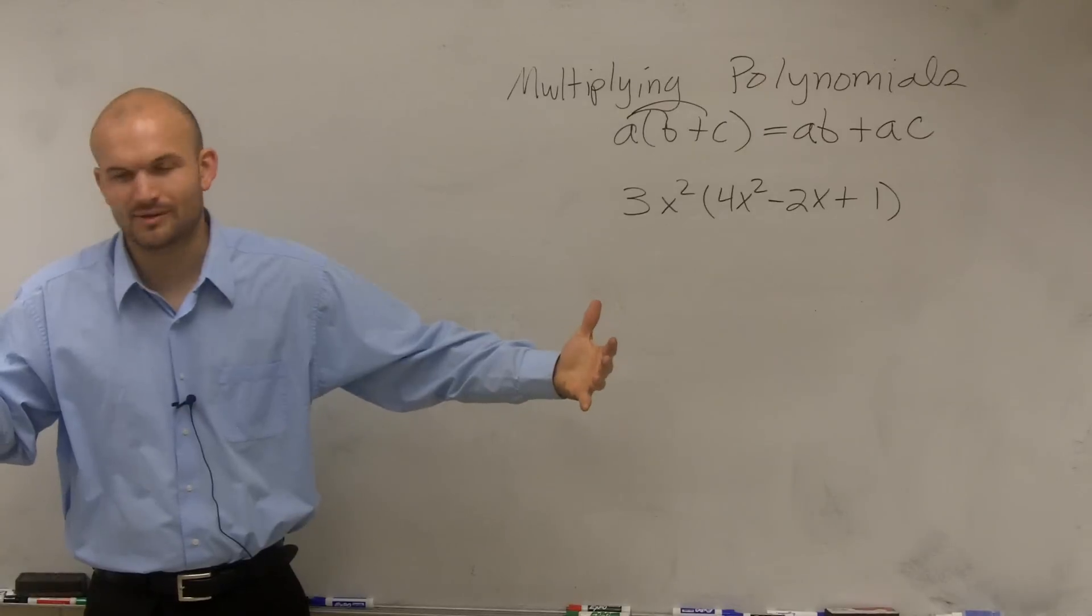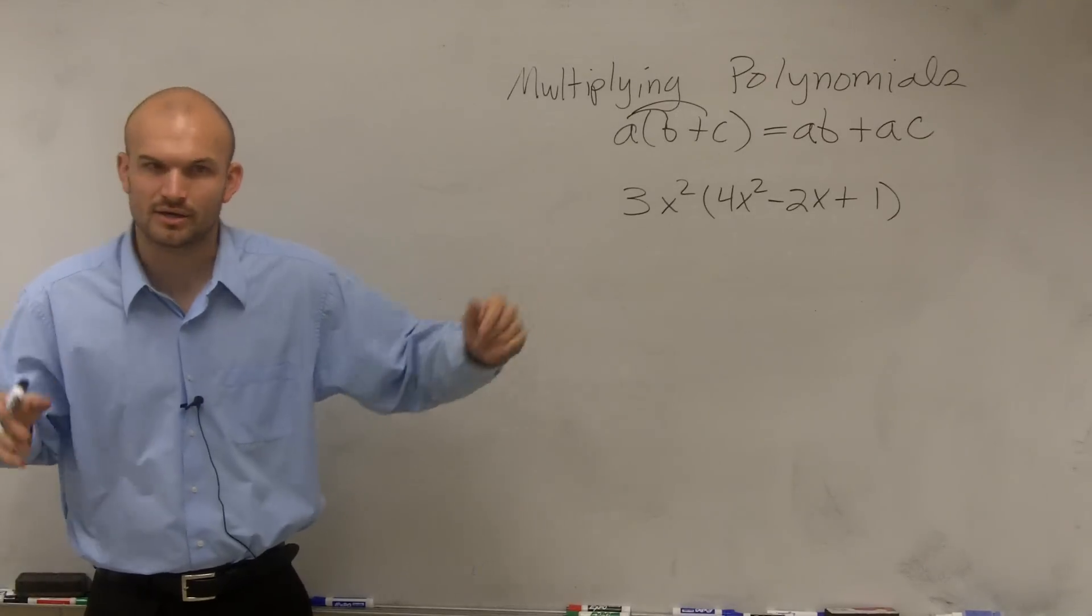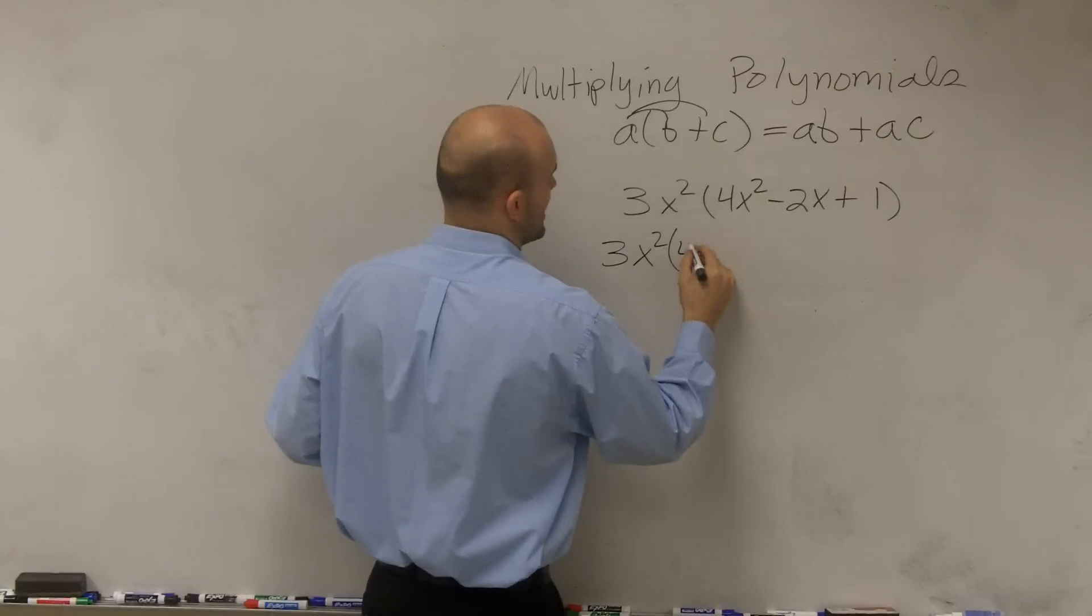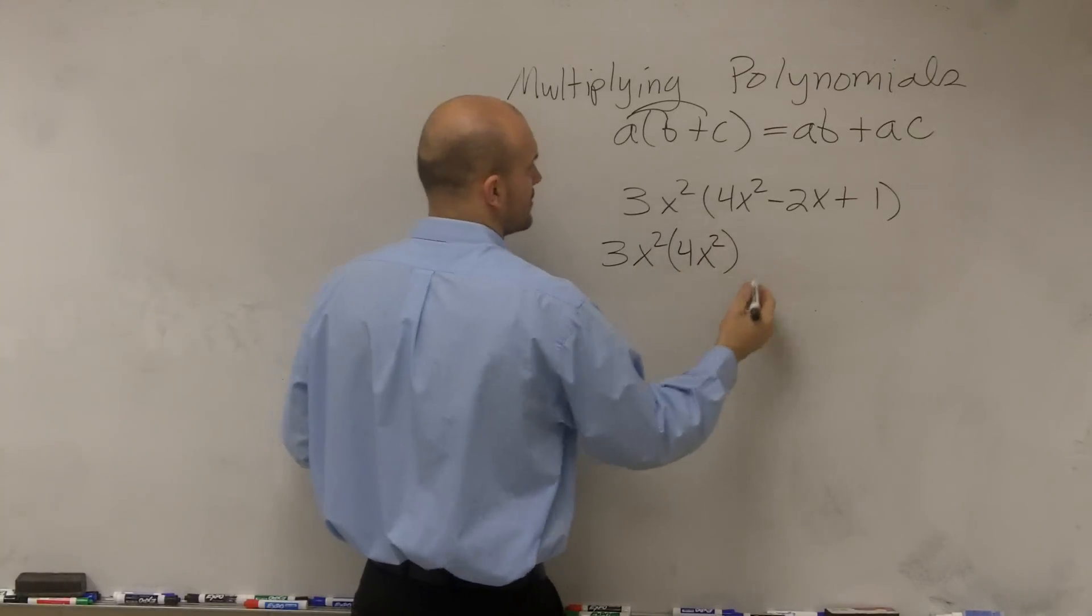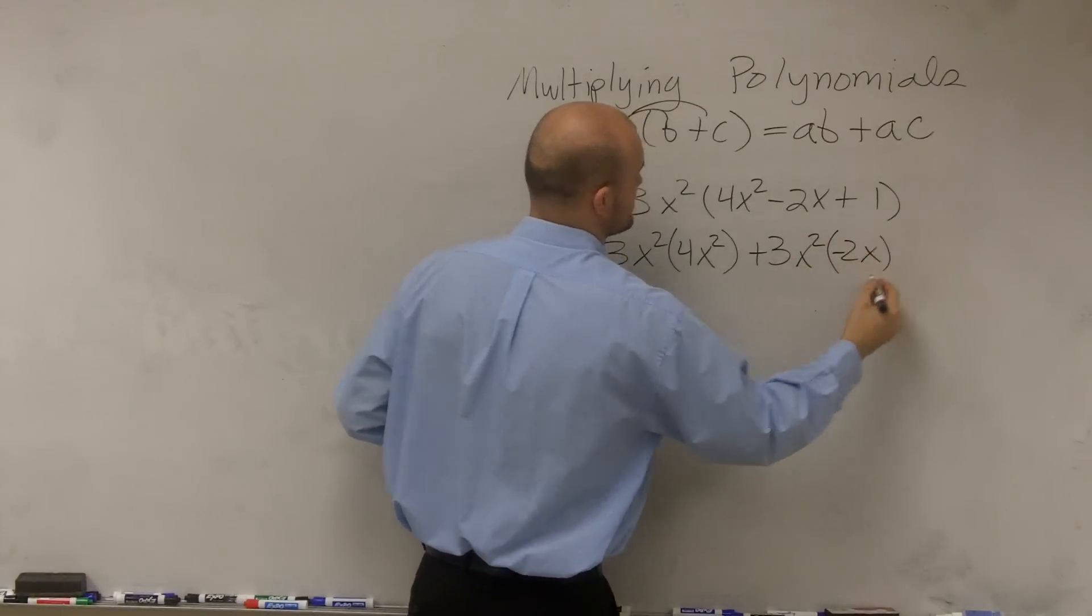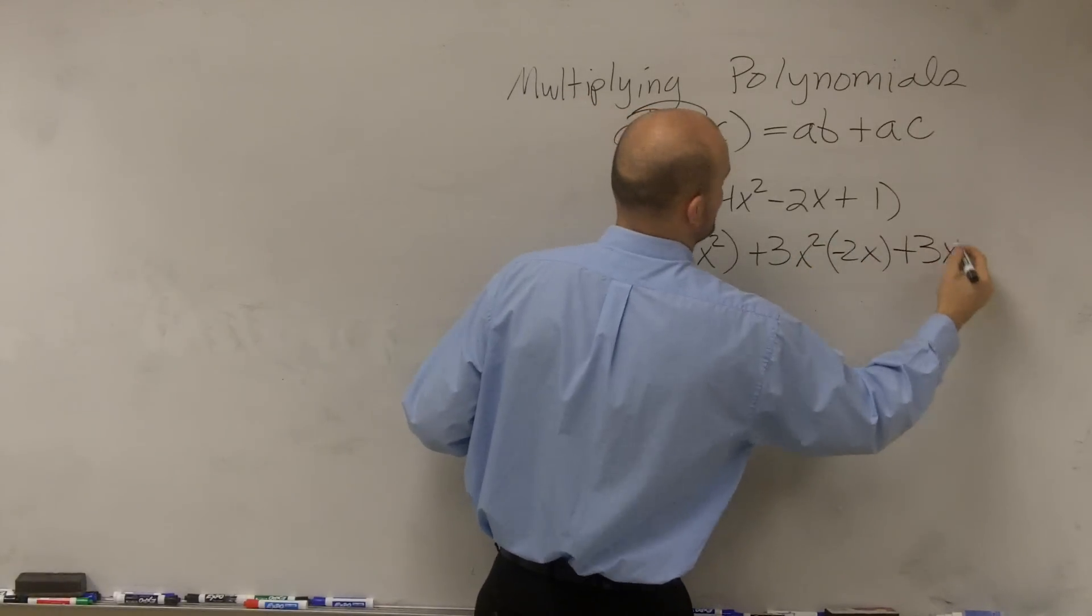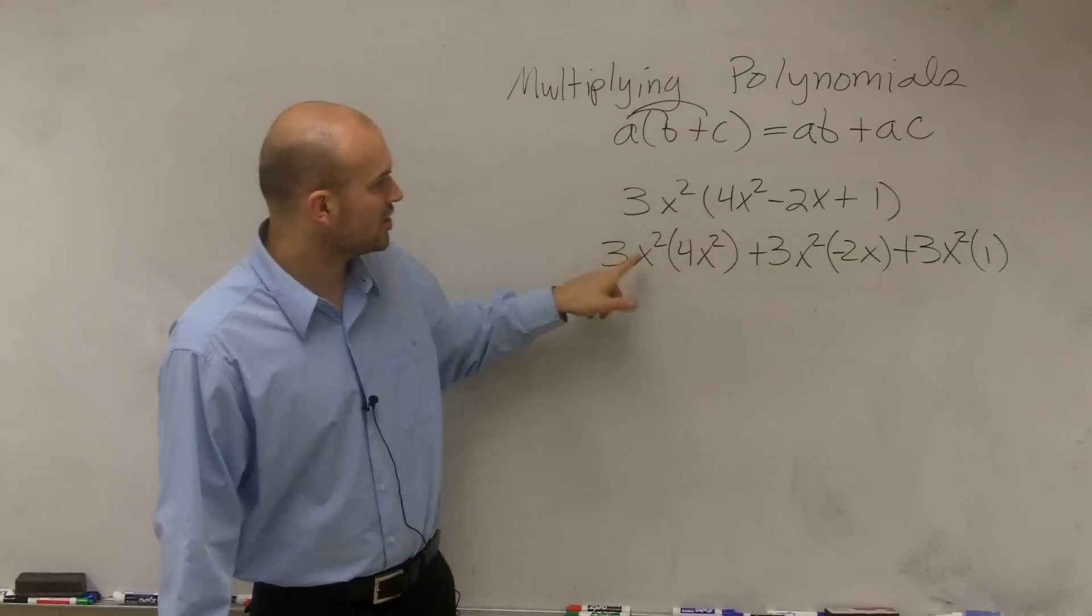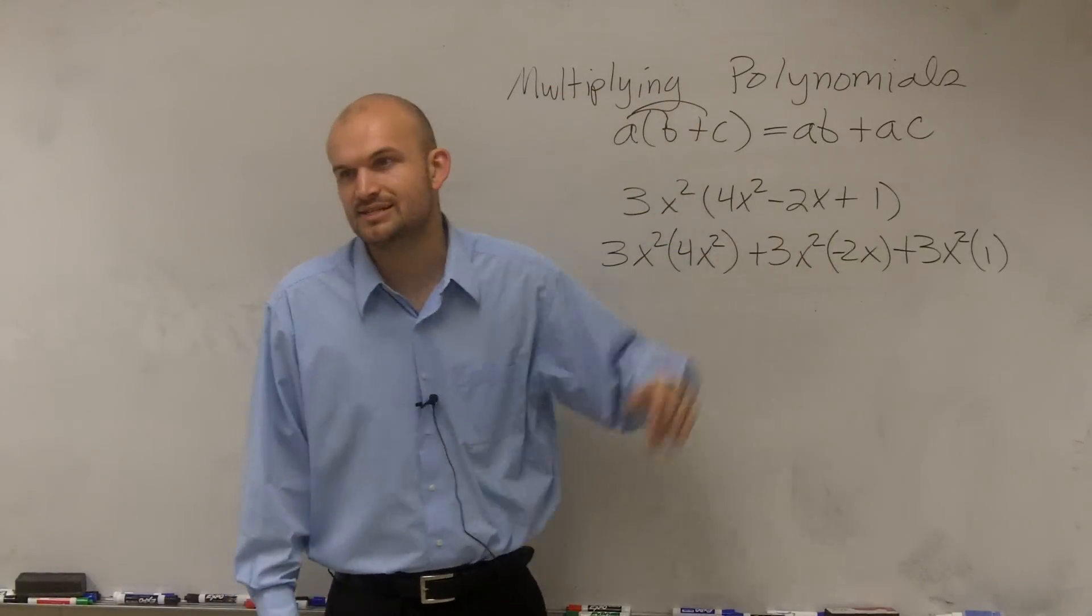So I'm just going to write out the long way. We usually don't do this. We kind of do it quicker. But what this means is you're going to have 3x squared times 4x squared plus 3x squared times negative 2x plus 3x squared times 1. So do you guys see how I'm multiplying my outside term times every single term inside?